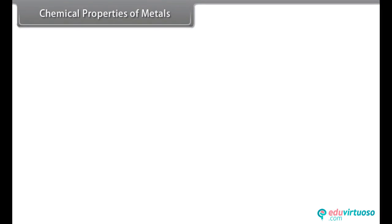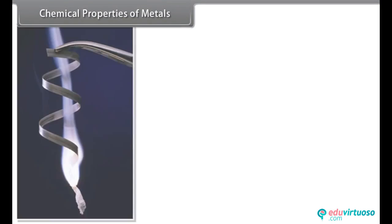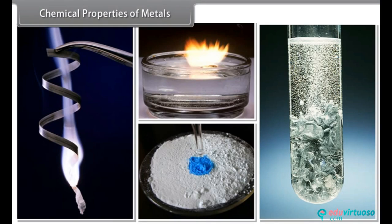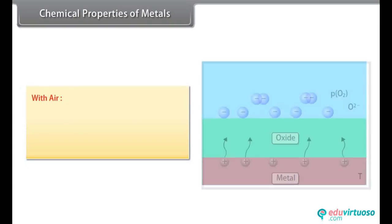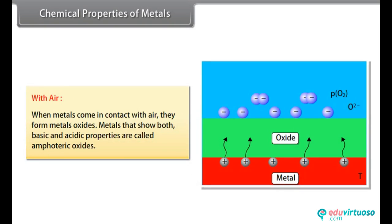Chemical properties of metals. Let us look at some chemical properties of metals. These properties include reactions of metals with other elements: air, water, acids and other metal salts. With air: When metals come in contact with air, they form metal oxides. There are some metals that show both basic and acidic properties. Such metals are called amphoteric oxides.